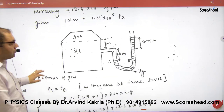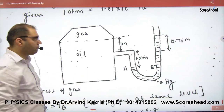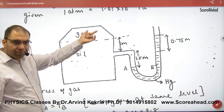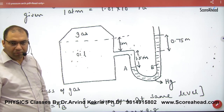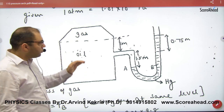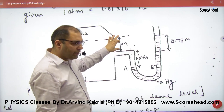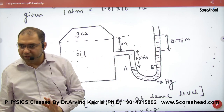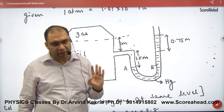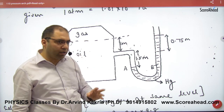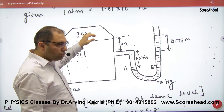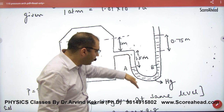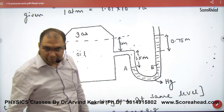For example, there is a manometer with gas and oil on one side. The height of oil is 1 meter on one section and 1.5 meters on another, and after that it is mercury — all heights are given. If the gas pressure increases, it will push the oil, the oil will increase the pressure, and mercury's height will go up.